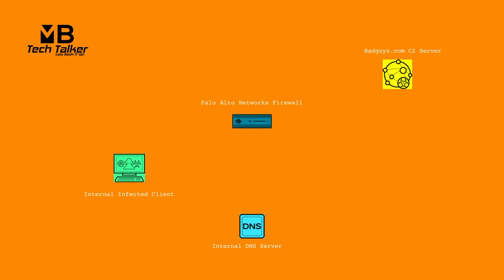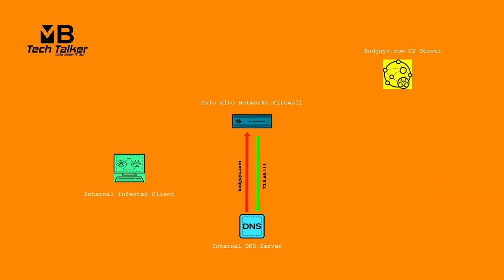The solution is for the firewall to take a different action: sinkholing. The firewall's sinkhole action is to forge a reply to the internal DNS query trying to go to badguys.com using the sinkhole IP address. This can either be the predefined Palo Alto Networks IP address or an IP address of your choice. This sinkhole action is then recorded to the threat log.